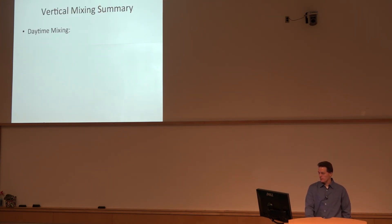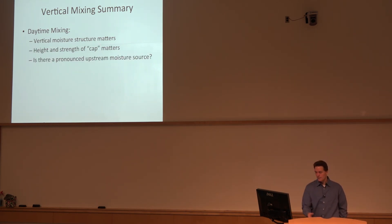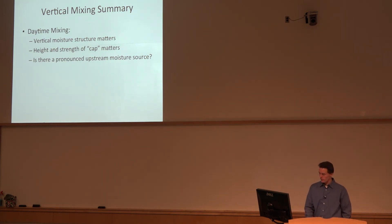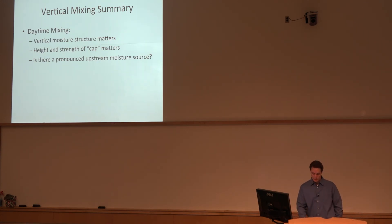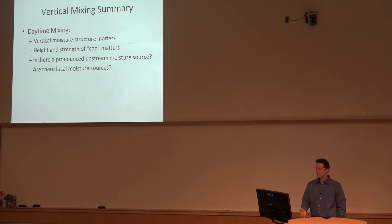To summarize vertical mixing: it's during the daytime, and it's the vertical moisture structure that matters most. We need to know the height and strength of the cap — our informal reference to the base of the elevated mixed layer — and what we have as an upstream moisture source. If we have one, we can offset the mixing; if we don't, typically you'll see the dew points drop off. Do we have any local moisture sources? Are we going to be evaporating moisture from the ground upward into the boundary layer, or do we have green vegetation or crops that are transpiring? All of these things matter. In this case, with drought conditions to the south and not so much to the north, everything suggested north would be more interesting based on the observed data.